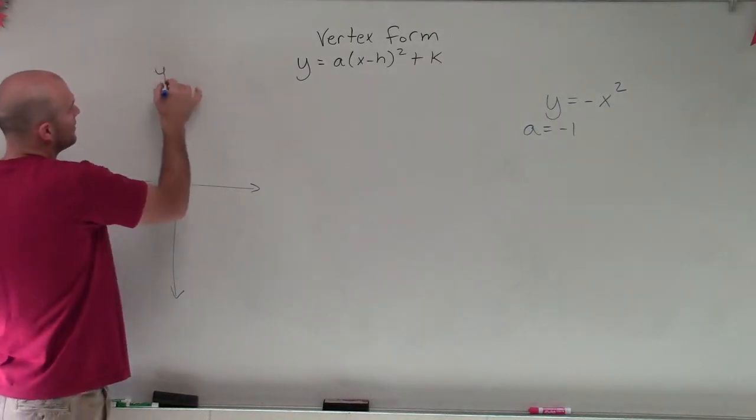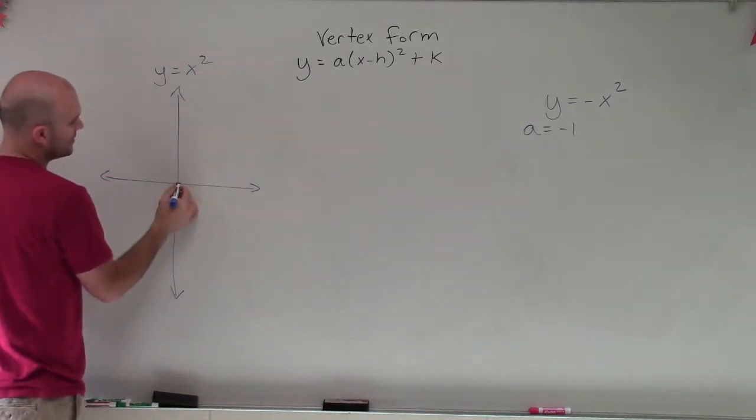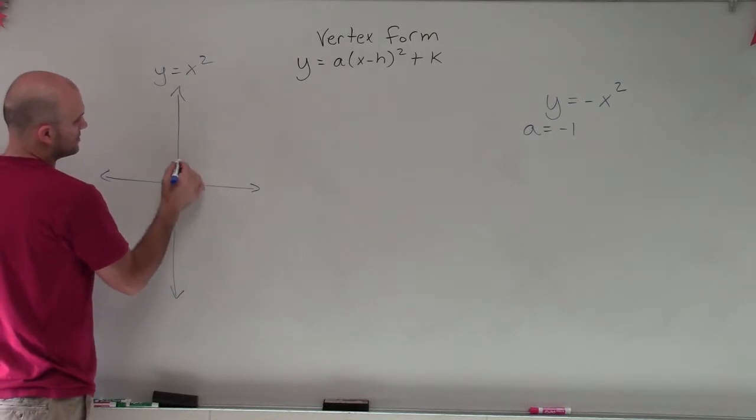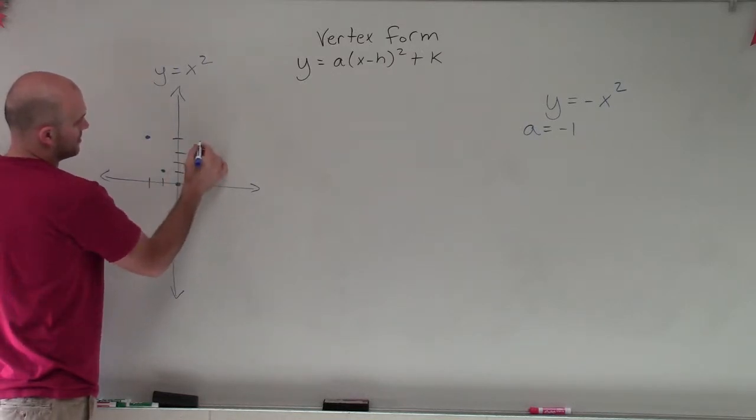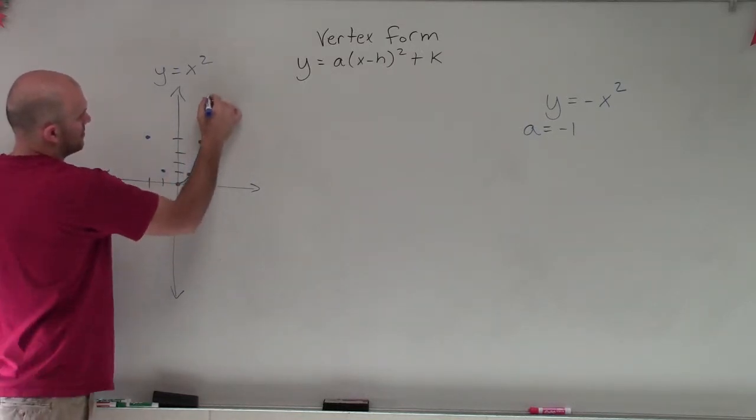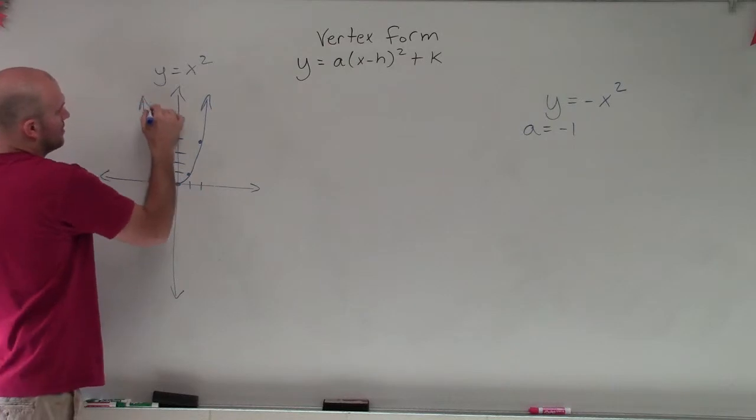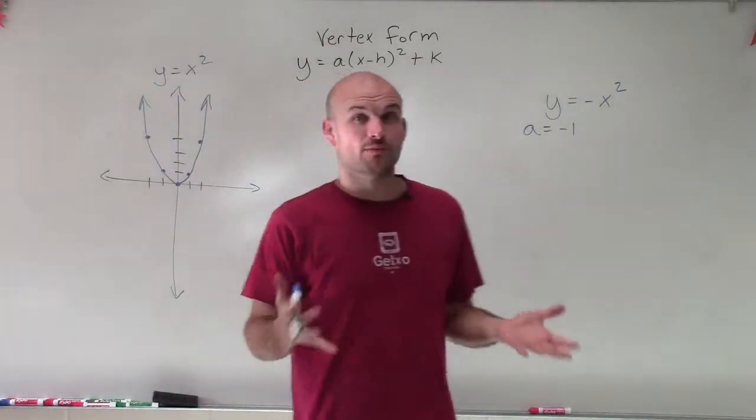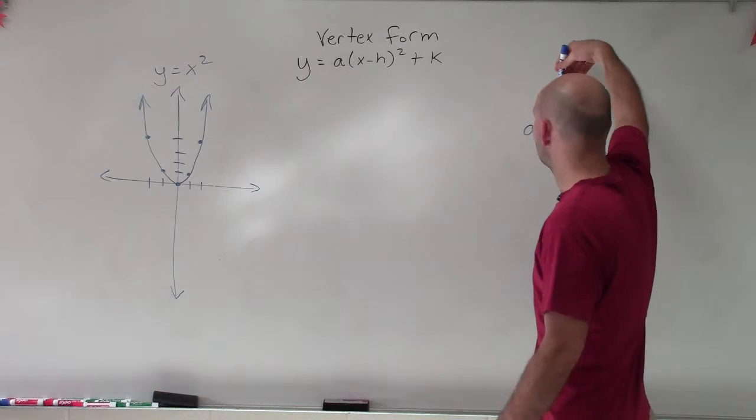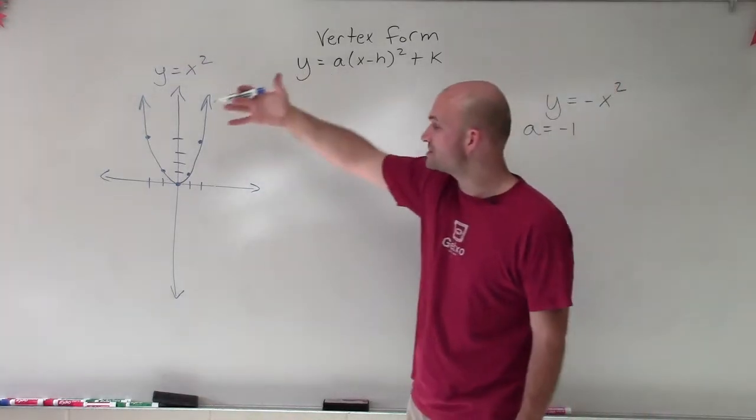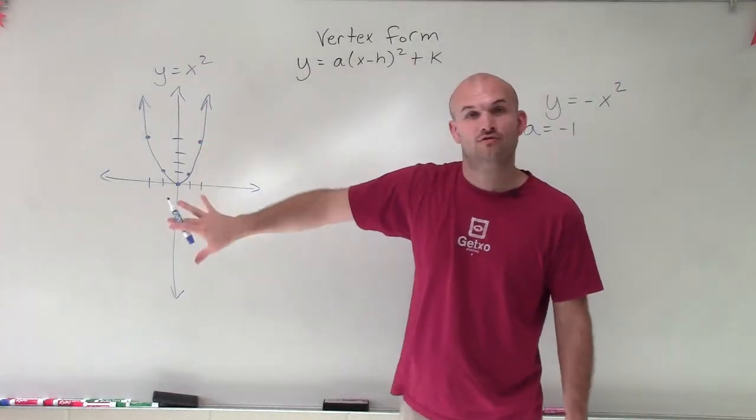Well, the parent graph y equals x squared, we know is going to look something like this. All right, so that's going to be our parent graph, y equals x squared. And when we're going to apply the transformations, especially a negative number, what it's going to do is this whole graph is going to be reflected over our x-axis.